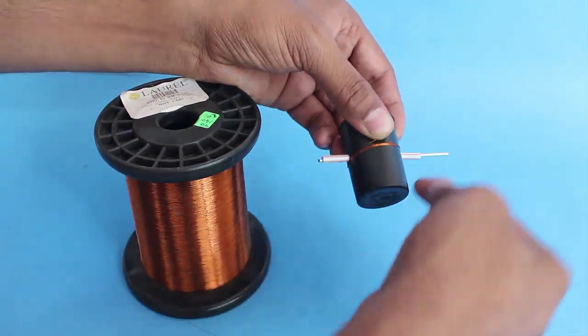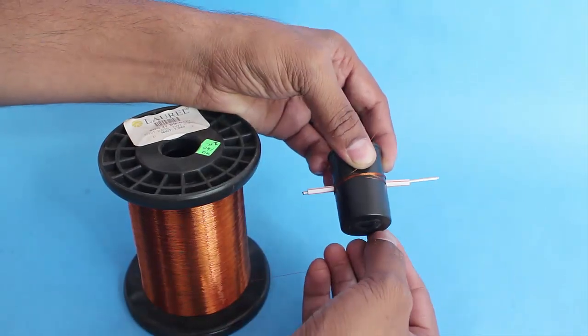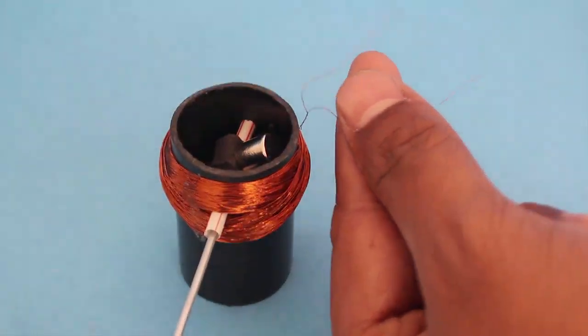For the coil, wrap 1000 turns of 35 gauge insulated copper wire on top of the film can.